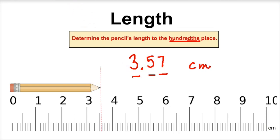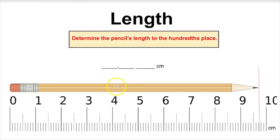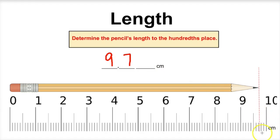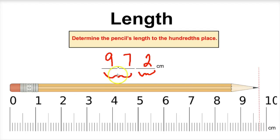Let's take a look at one final one. It says to determine the pencil's length to the hundredths place. If you pause this, go ahead and try to figure this out before I do. So if we take a look, it looks like the pencil is going to be 9 centimeters with 100% certainty, and 9.7 centimeters with 100% certainty. It's a little bit past the 7, so I'm going to say this is a 2 — 9.72 centimeters. The hundredths place is uncertain; we had to estimate that. However, the 9 and the 7 are measured with 100% certainty.